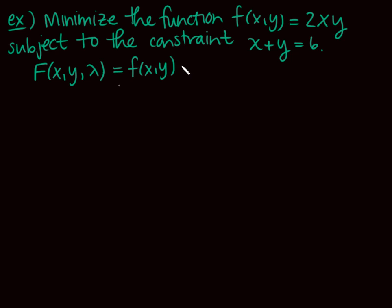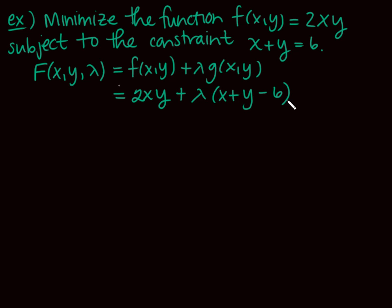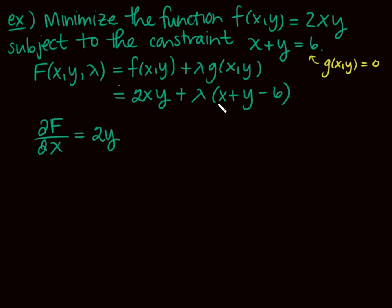Remember, g(x, y) equals zero, so we get x + y − 6 from our constraint. I want to see you use good notation — equals signs, telling me what everything is. I shouldn't have to guess what something is when I read your work. Now let's start taking partials. The partial of F with respect to x: the 2xy becomes 2y, and from the lambda term we get lambda. So the partial of F with respect to x is 2y + λ = 0.